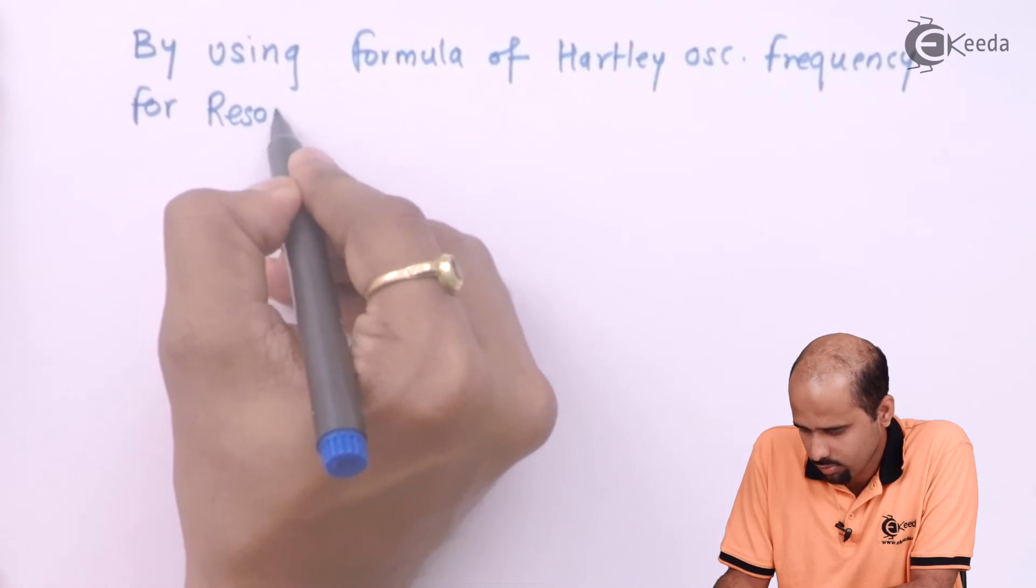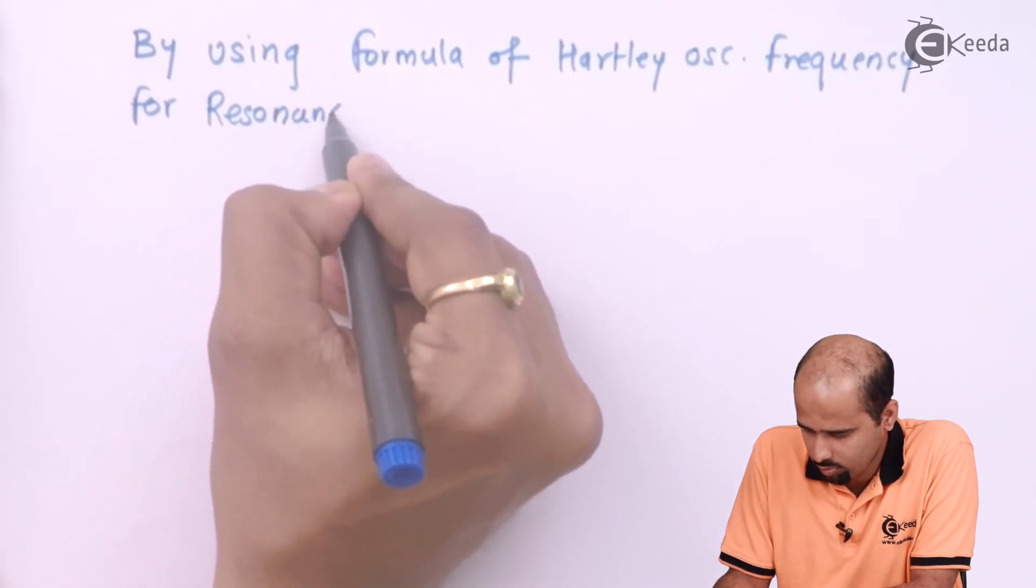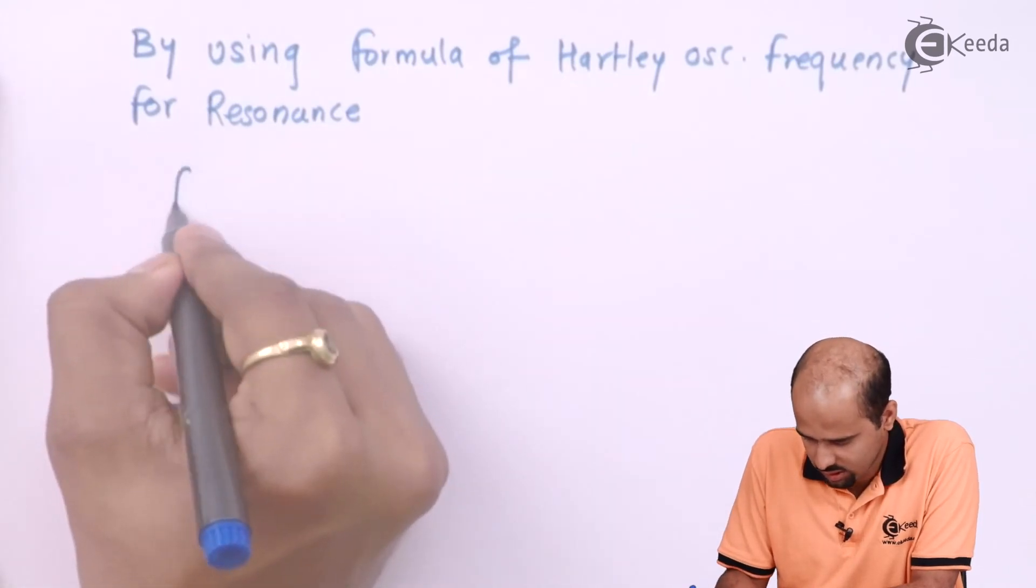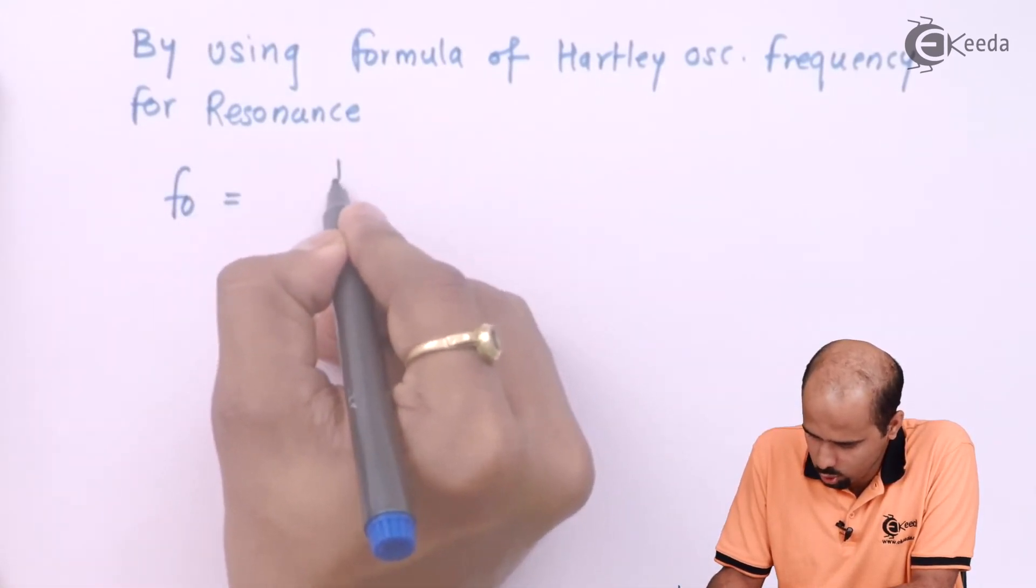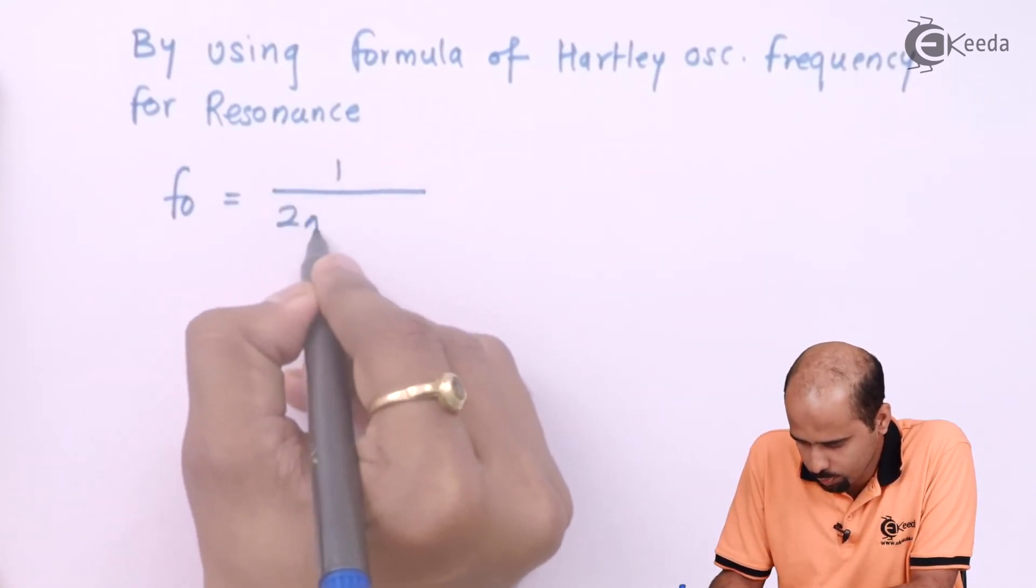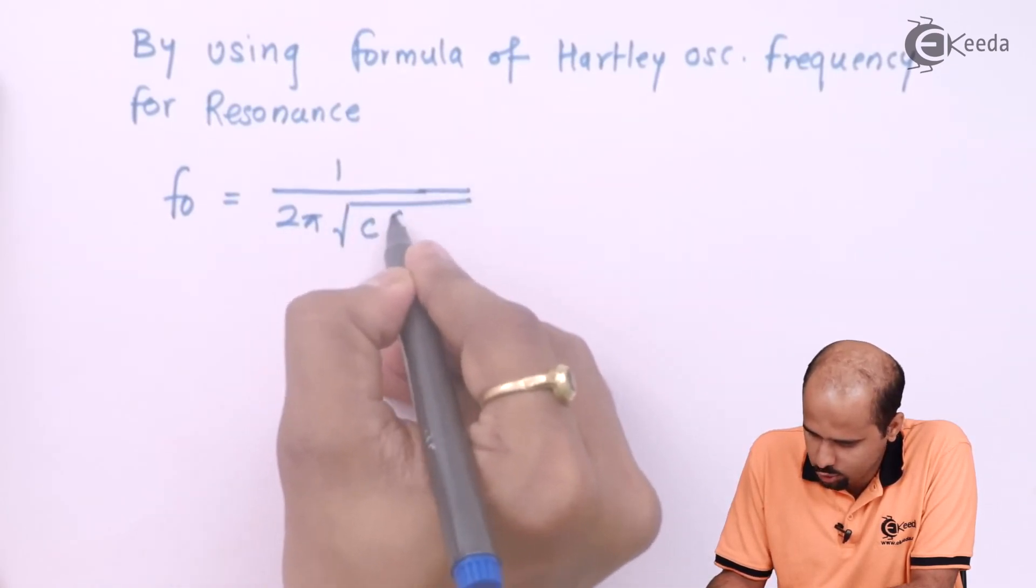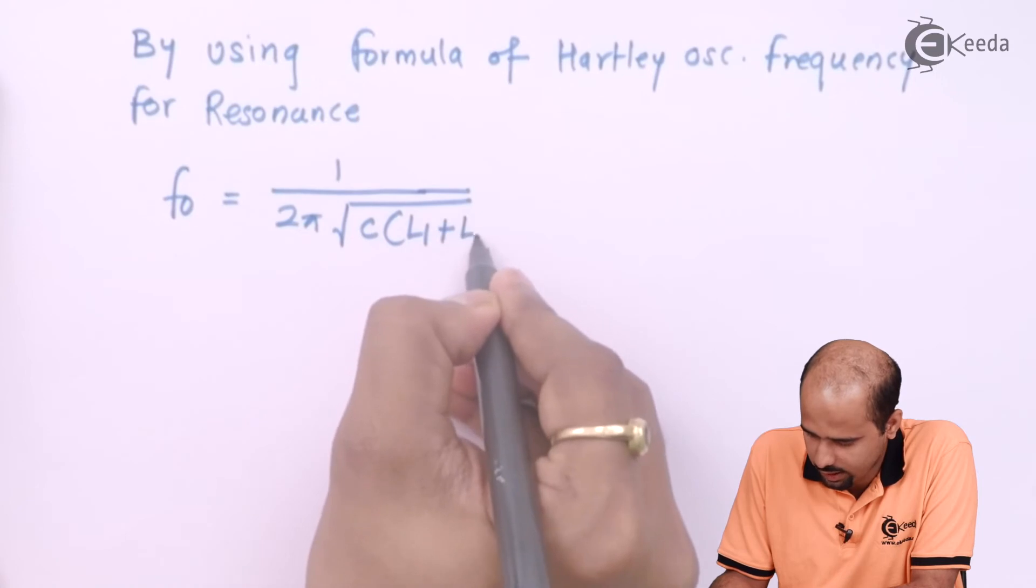right? Or also it is called as an oscillatory frequency, that is F0 is equal to 1 upon 2 pi under root of C into L1 plus L2.